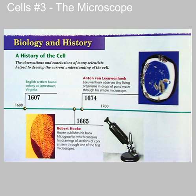In 1590, the first compound microscope was invented. It was created by Hans Johnson and his son Zacharias. They were Dutch eyeglass makers who made the very first compound microscopes. These were simple microscopes — basically just a tube with a lens at each end.